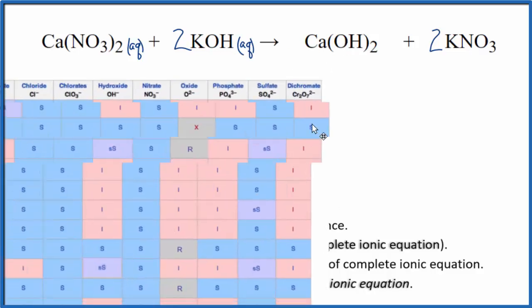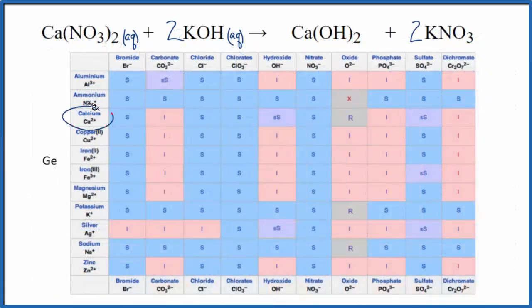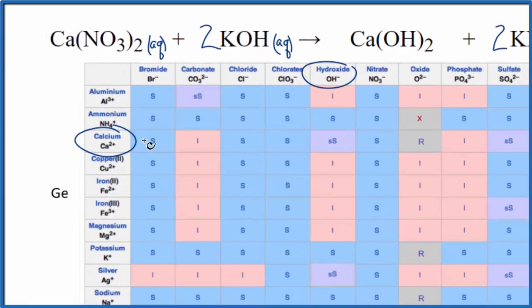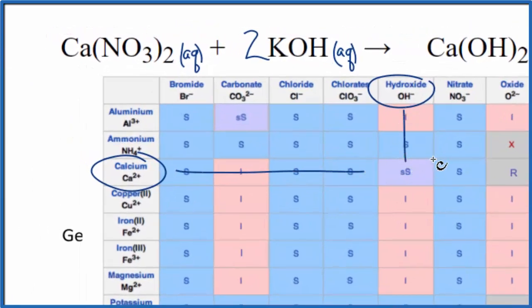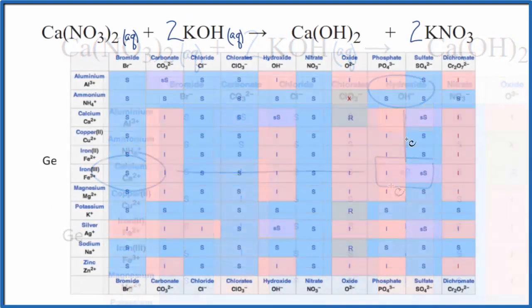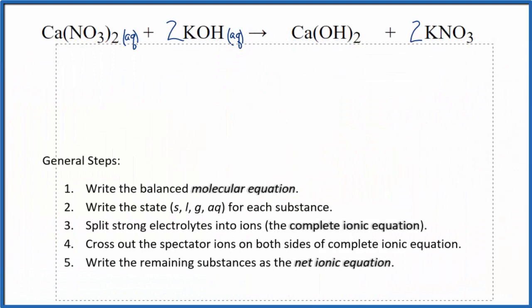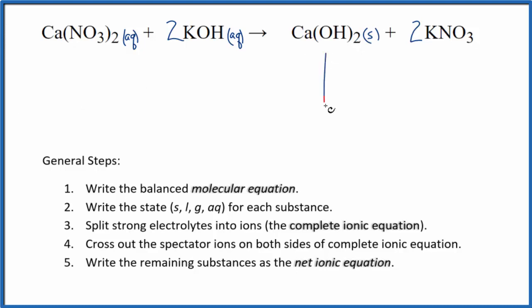So here's calcium and here's hydroxide. So we go over and down and we see this SS. That means calcium hydroxide is slightly soluble. And for the purpose of net ionic equations, we consider that to be insoluble. So we're going to write an S. We're going to treat this as a solid and it will precipitate. It'll be a precipitate in our reaction here.